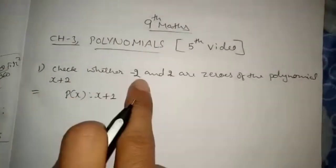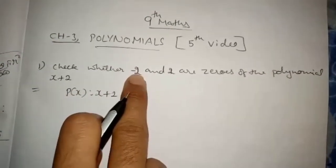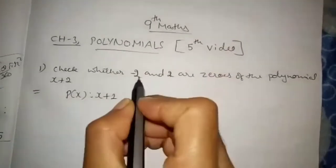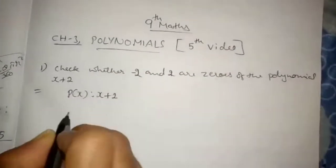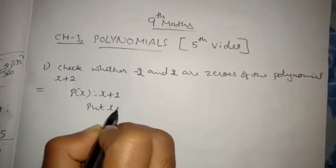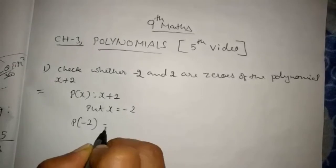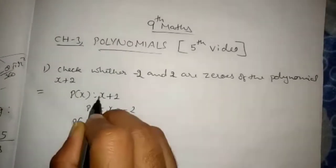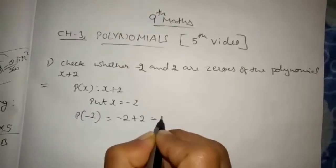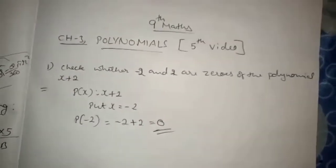What you have to do is, instead of x you have to substitute minus 2, and then again instead of x you have to substitute 2. So first we will substitute minus 2. Put x equals to minus 2, so p of minus 2 equals: in the place of x you put minus 2, so minus 2 plus 2 equals zero. So you got the answer as zero.